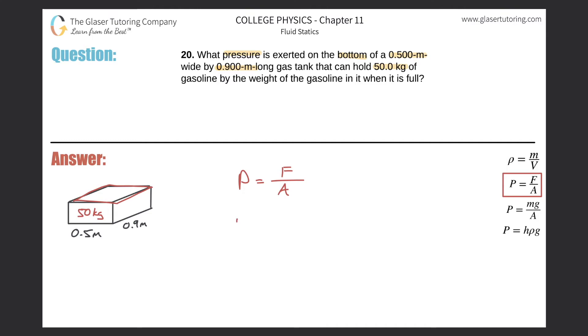Now to find the pressure, we know the mass of the gas but we need to know the force of the gas. So just take the mass and multiply it by 9.8 to find the weight. Weight is a force, and then divide it by the area. Remember this has to all be in meters, which is good because that's what they gave us, so it's just length times width.